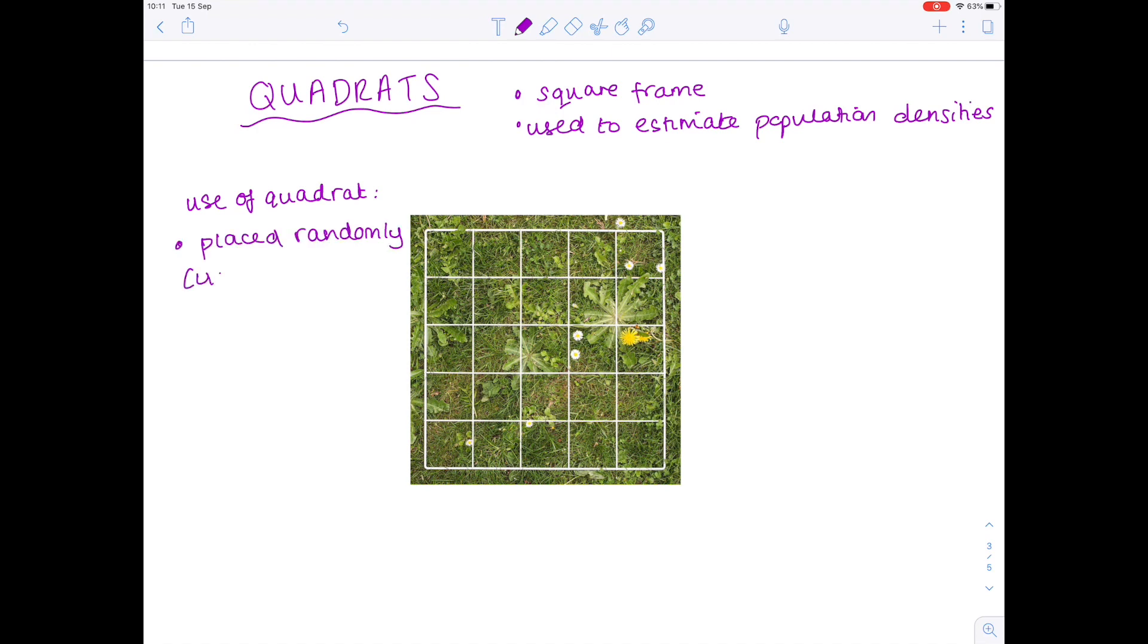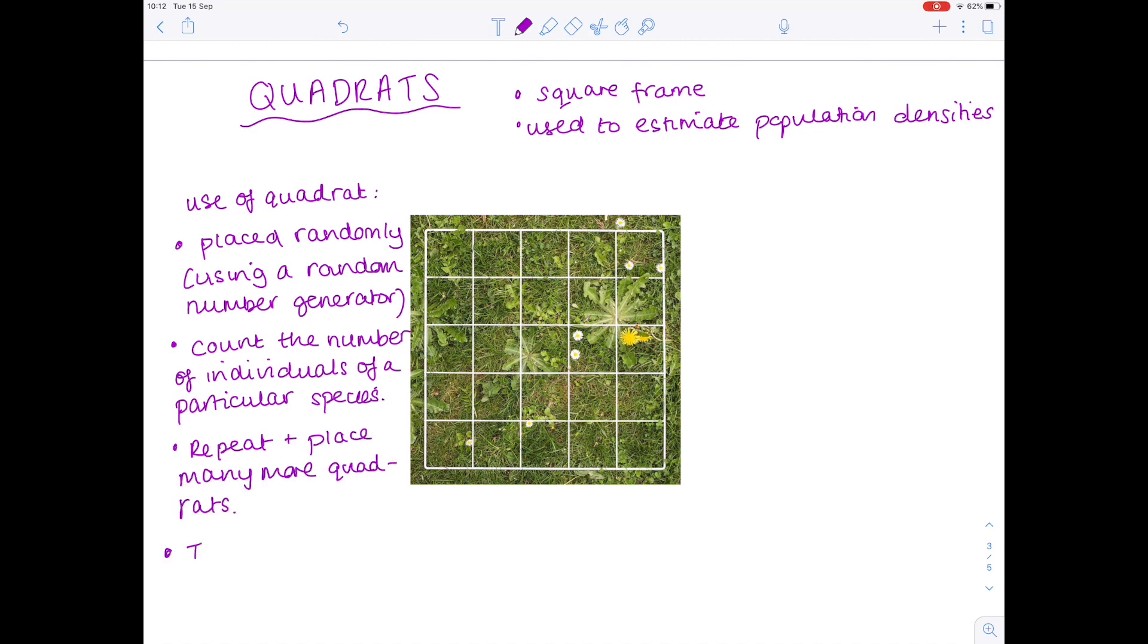Then you count the number of individuals of a particular species, and then you repeat and place many more quadrats and repeat the process. This will allow you to estimate percentage cover of a particular species.